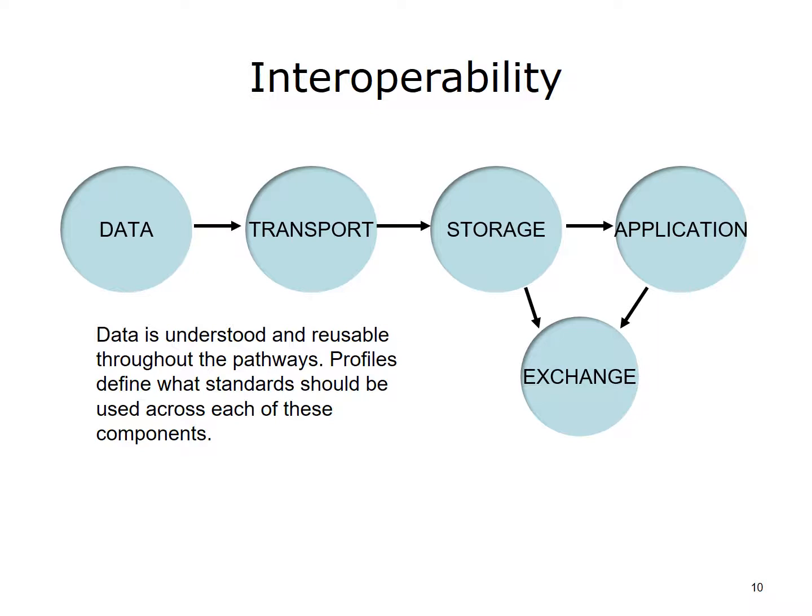This slide illustrates what this entire component is about. We must understand what's in each circle — data, transport, storage, application, and exchange — and ensure information is not lost as data moves from sender to receiver. We must speak the same language; data must have the same meaning between sender and receiver. We must have physical and logical standards for transportation so that meaning, context, and provenance are preserved. The data must be stored so the receiver can retrieve and understand it, with storage that permits easy navigation.